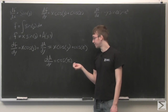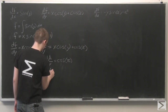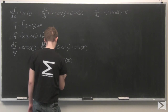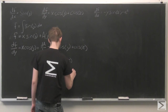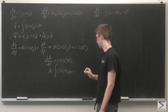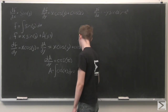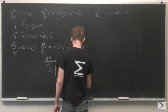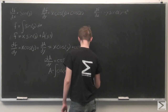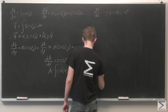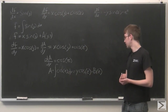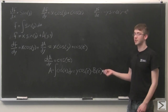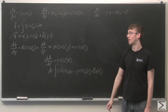Now we're going to integrate dA/dy = cos(z) with respect to y. We get y cos(z) plus an unknown function of z. Now that we have this expression for A, we're going to plug it back into the expression we have for f so far.